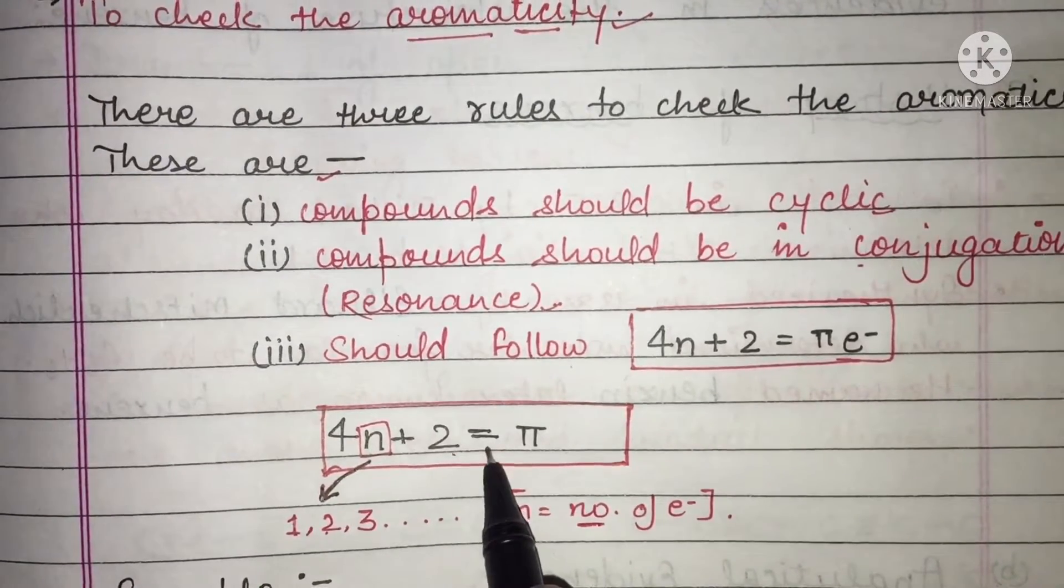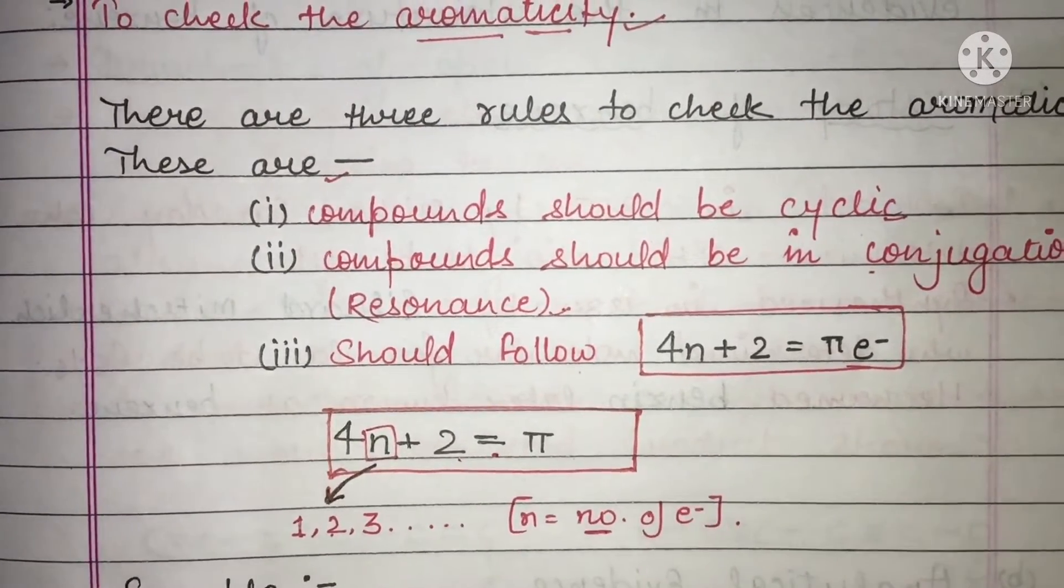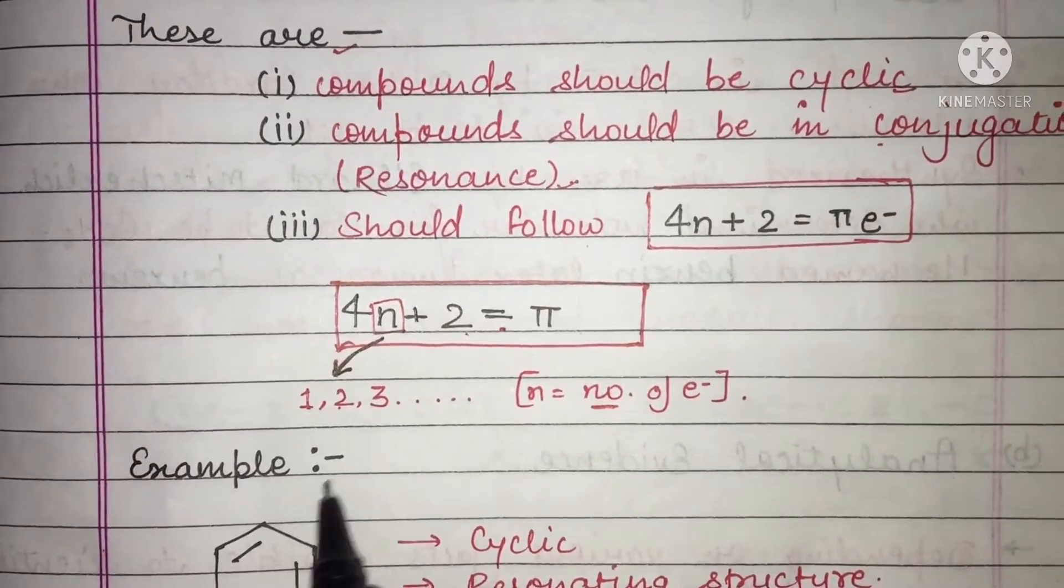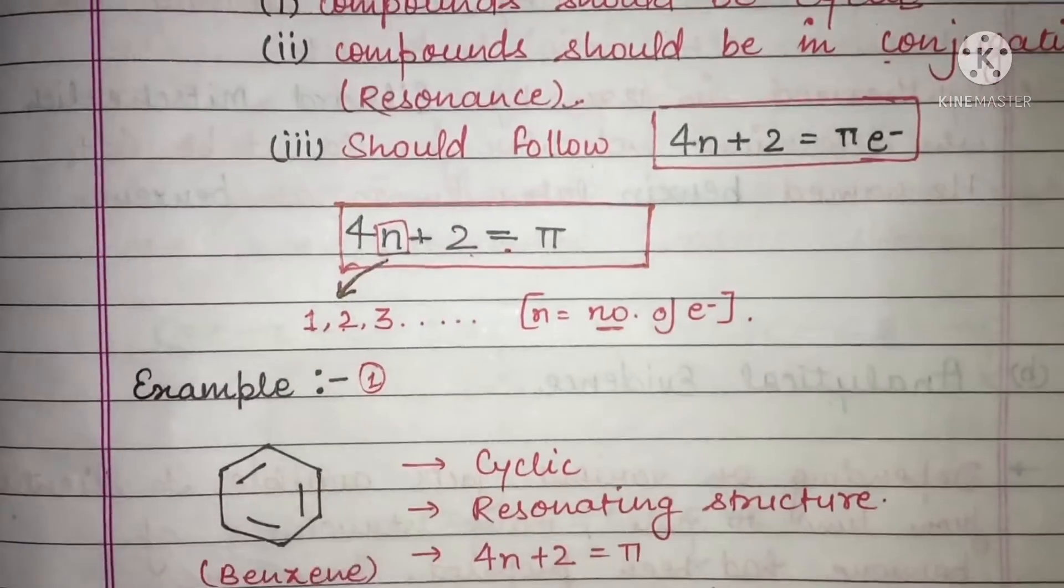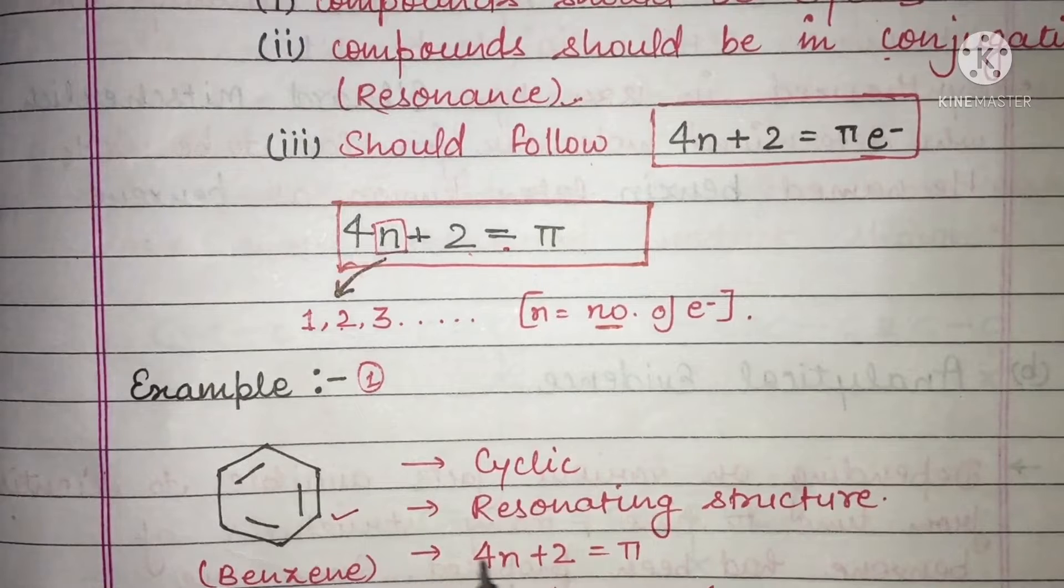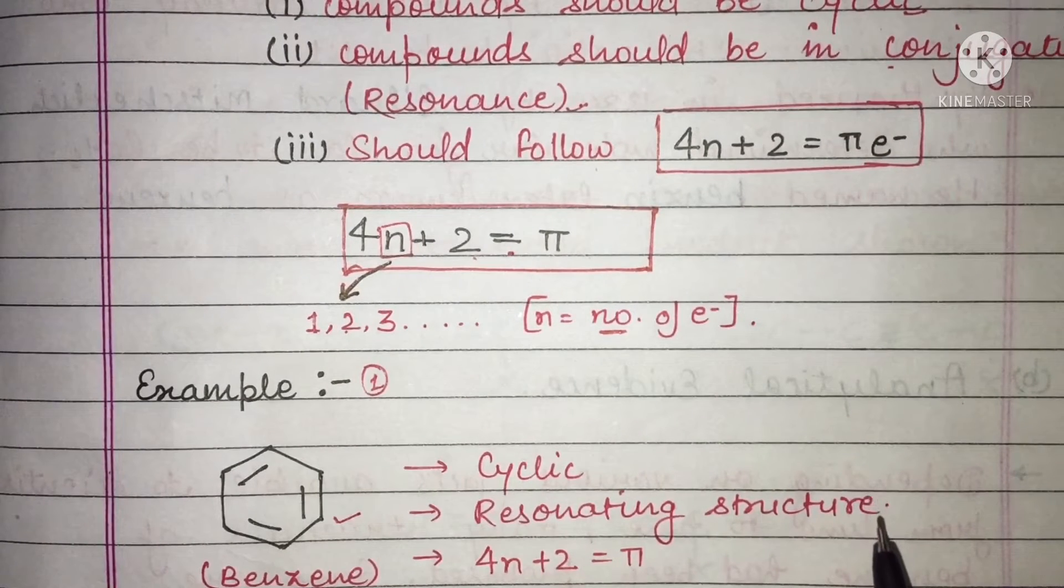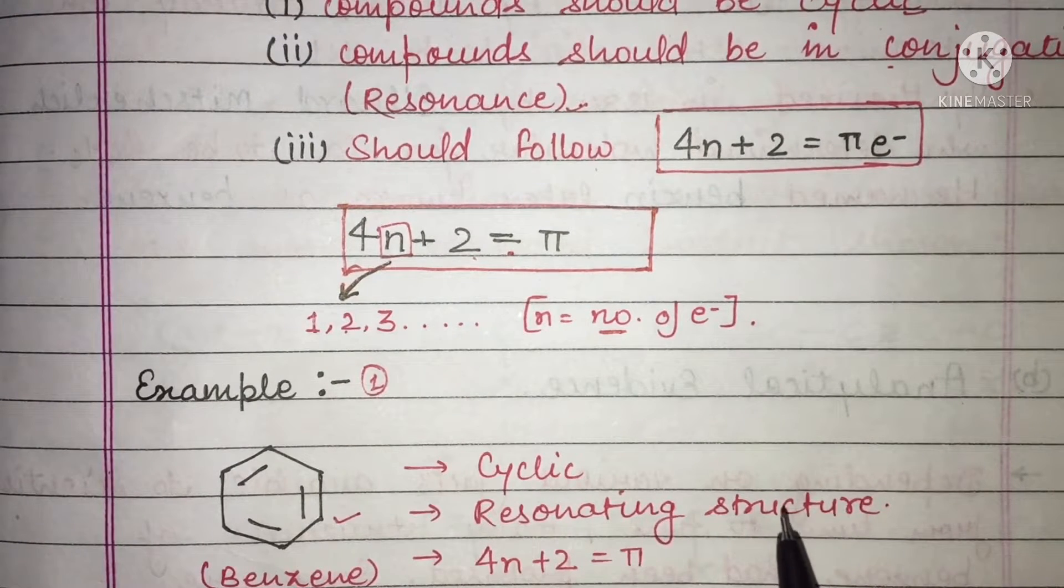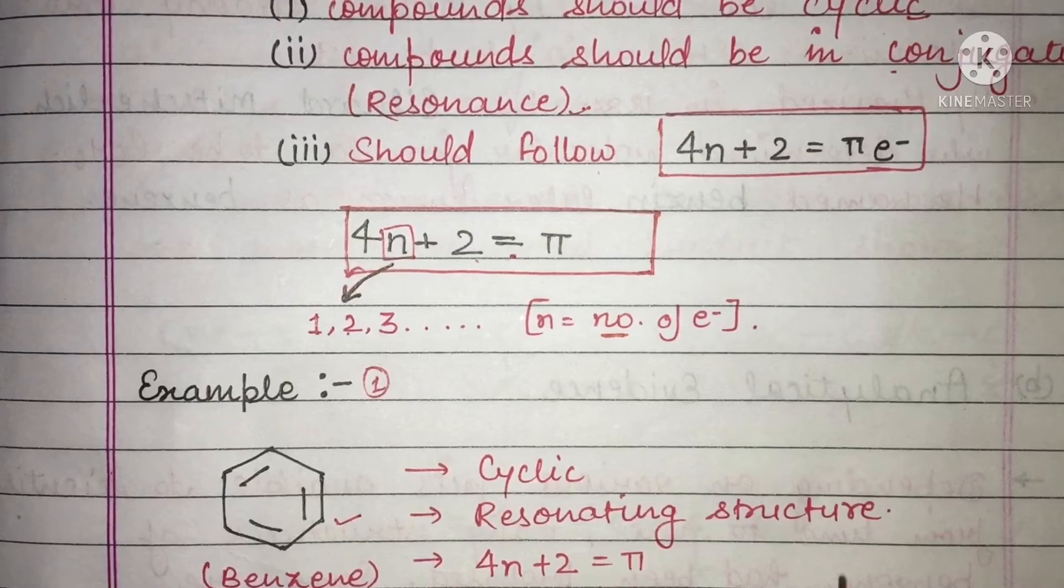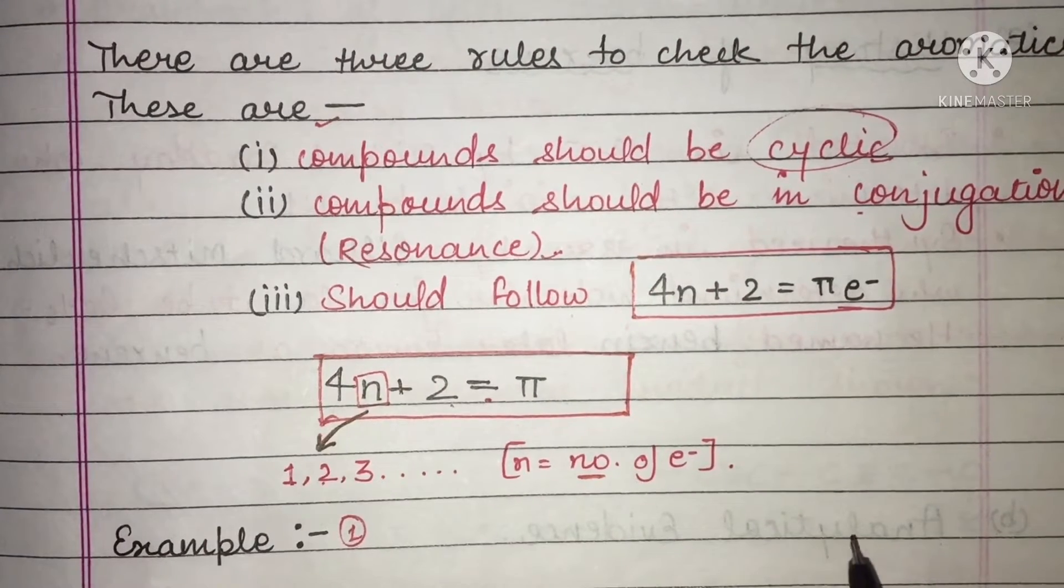4n+2 is equal to π electrons. Example one is benzene. We will see benzene structure. We will see that Hückel's rule, the rules must be followed to check aromaticity.